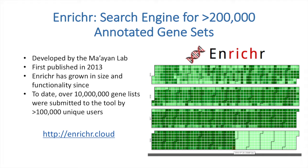Many biological experiments result in the generation of differentially expressed gene or protein lists. Enrichment analysis is a method for identifying collective properties of such identified lists by comparing them to existing lists created from prior knowledge organized into gene set libraries. Enricher is a popular gene list enrichment analysis tool that currently contains over 200,000 annotated lists organized into over 125 gene set libraries.